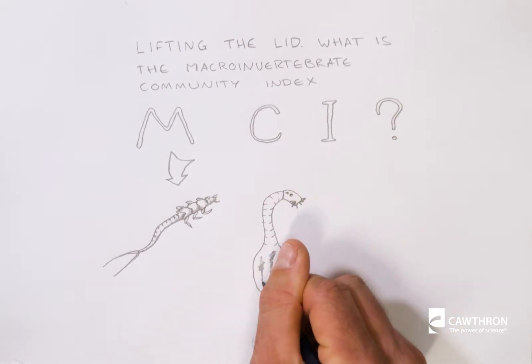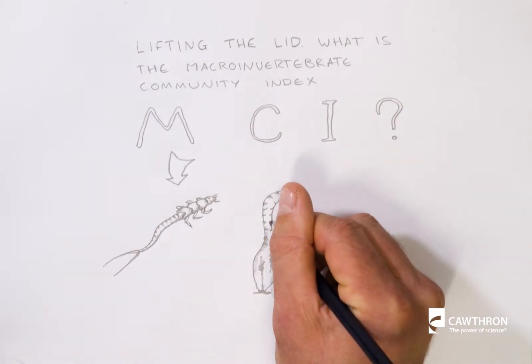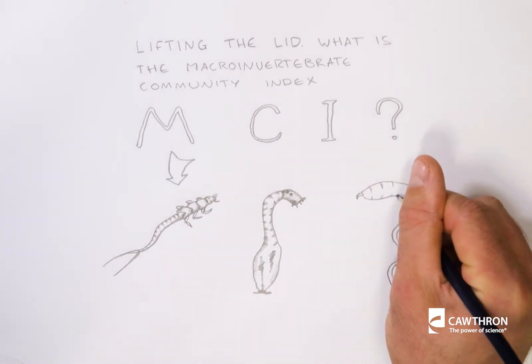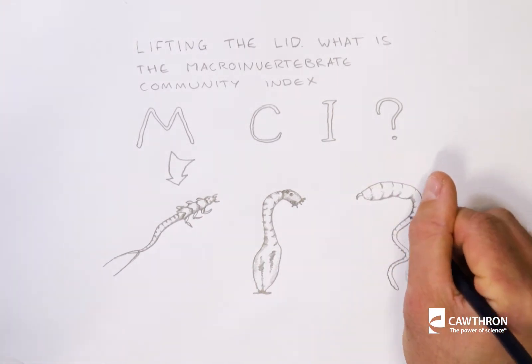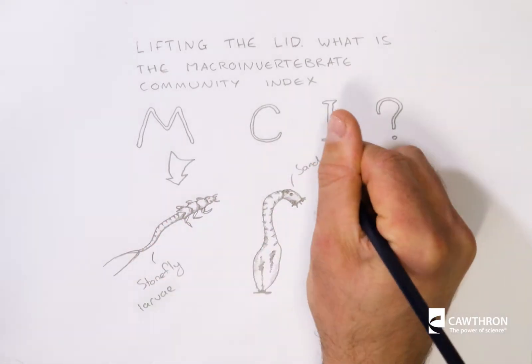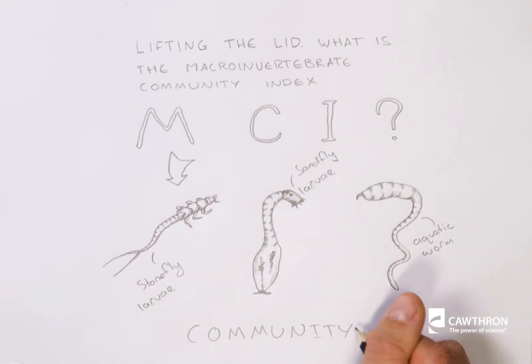These are the critters without backbones that live in our rivers and lakes. Some of them are reasonably well known, like the predatory stonefly or the annoying sandfly, which seems to be especially abundant on the west coast of the South Island. It actually has a larval form that lives on the bottom of our streams. And you also have the not-so-charismatic aquatic worm or oligochaete.